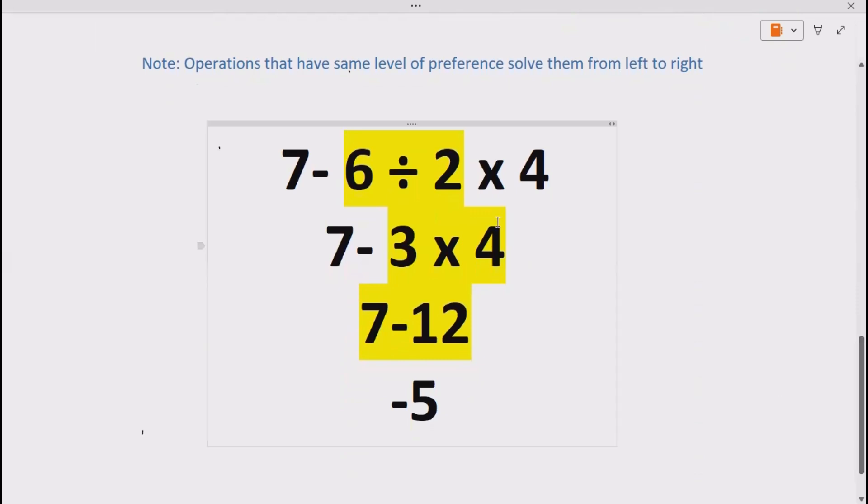So we do division first according to BODMAS or PEMDAS. 6 divided by 2 gives us 3.